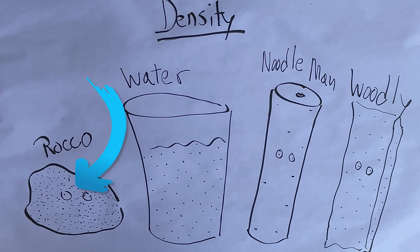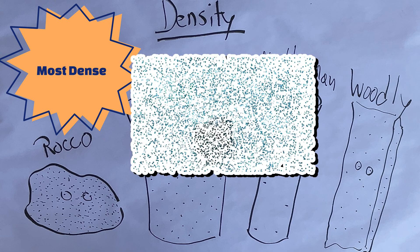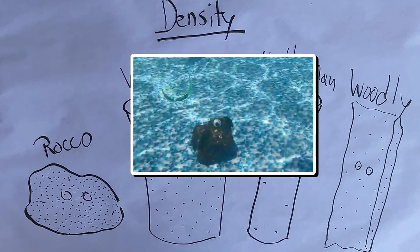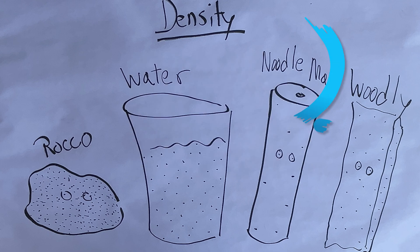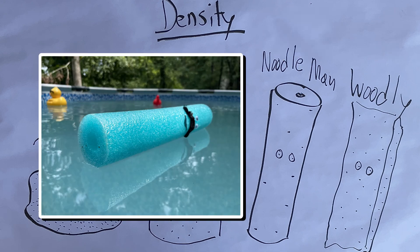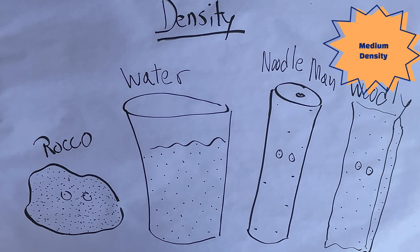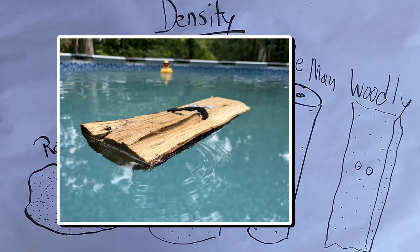Well, if you look at Racco, his particles are the most closely packed together — he's the most dense. Since he's more dense than water, he'll sink when you put him in water. Noodle Man is the least dense of these four items; his particles are spread way far apart. When you put him in water, not only does he float, but he floats and barely goes beneath the surface of the water. Then we have Woodley — Woodley's kind of like a medium density. He is just a little bit less dense than the water, so he floats but kind of floats low in the water.